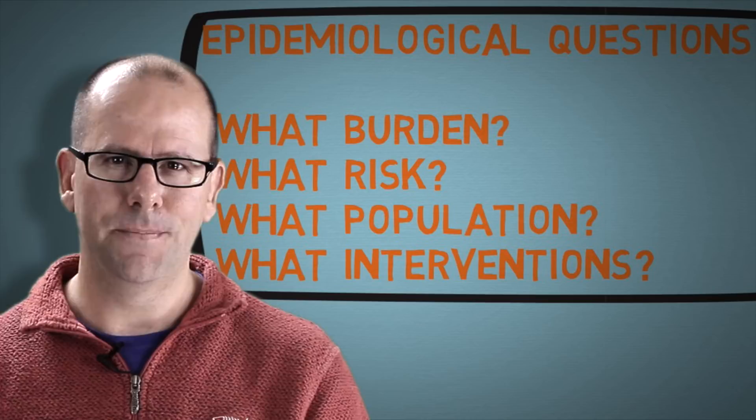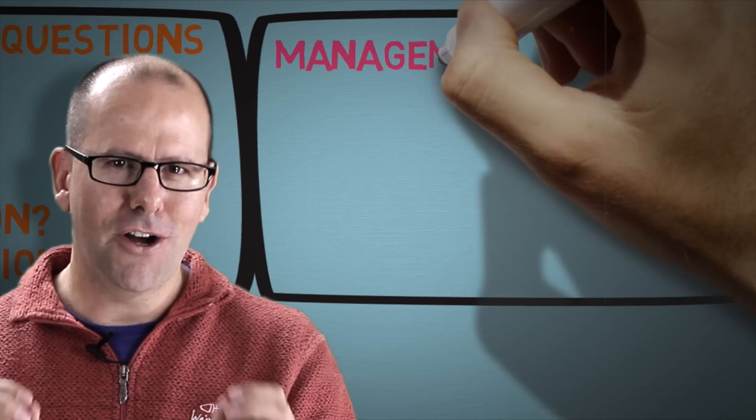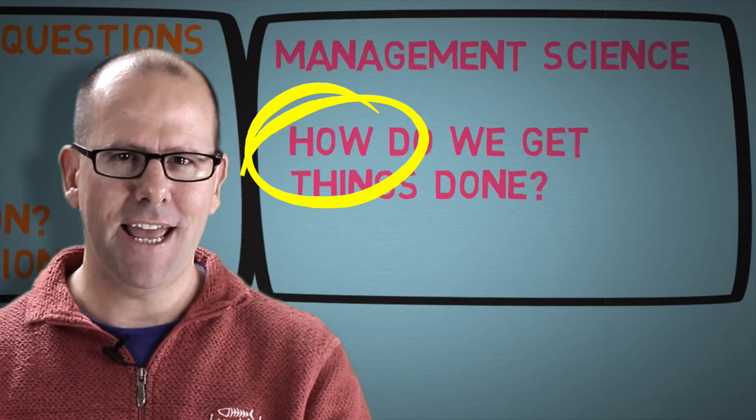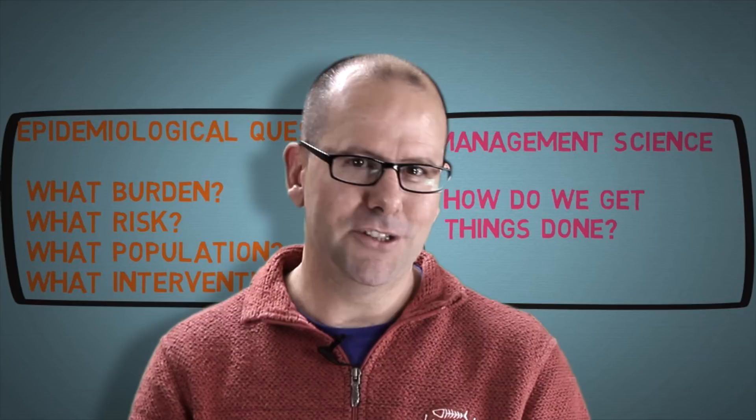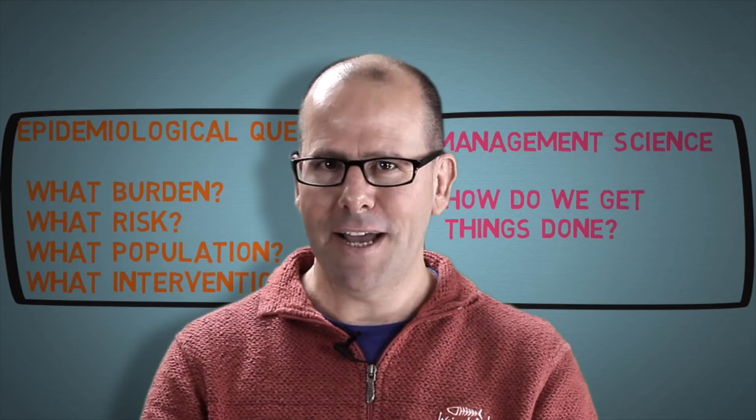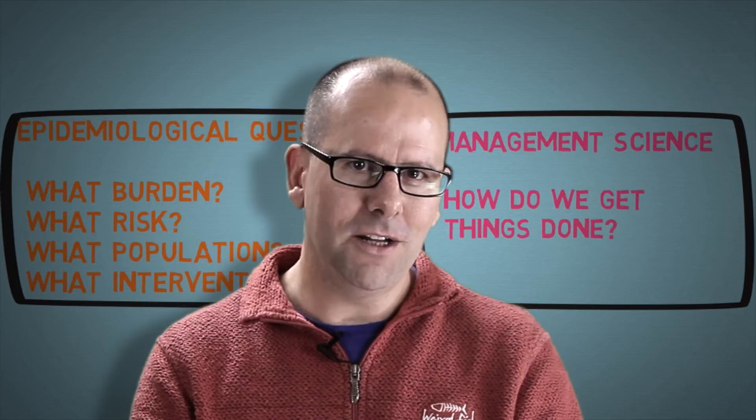So epidemiology answers the question, 'what?' Management science, by contrast, answers the question, 'how?' How do we get things done? How do we operationalize our plans? How do we mobilize our resources? How do we implement, lead, and govern? Management science is extremely broad — I did an MBA a few years ago and I'm acutely aware it can't be covered in one short video. But there are aspects of it which, if done well, will make you an extremely effective public health practitioner. They are: managing people, managing processes, and managing budgets.